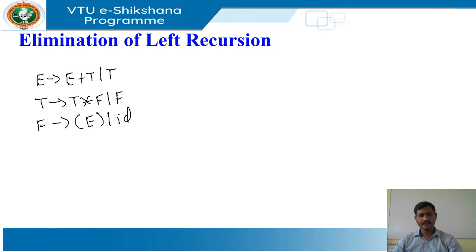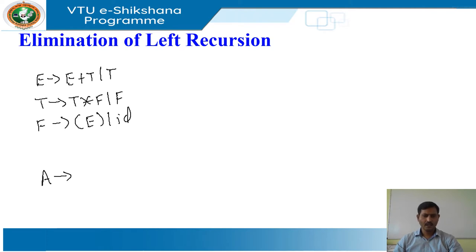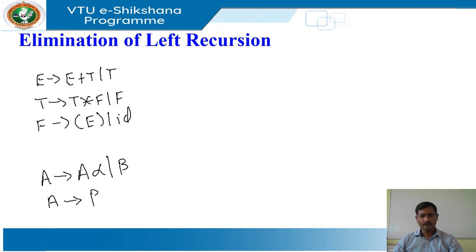We need to apply the left recursion elimination rule for each production which contains left recursion. If a production is of the form A derives A alpha | beta, then we write A derives beta A', A' derives alpha A' | epsilon.